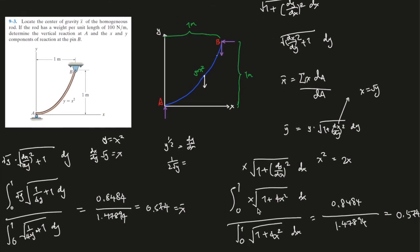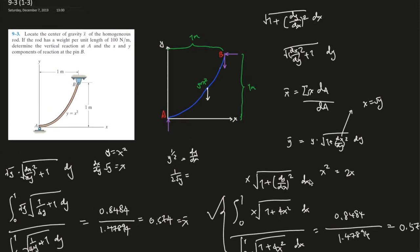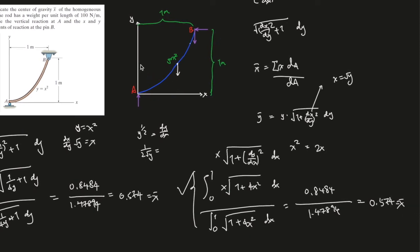0.8484 over 1.47894. And in the end, it should also give you 0.574 as your x bar. Does that make sense? It doesn't really matter which one you use. It's just which one is easier. So in this case, this one wins. This is a winner because this is easier, and we don't have to do so many complicated derivatives. We can just do 1 and plug an x over here. So now we've found the distance over here. So over here, this is 0.574.